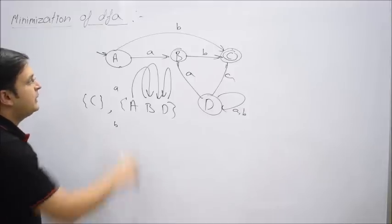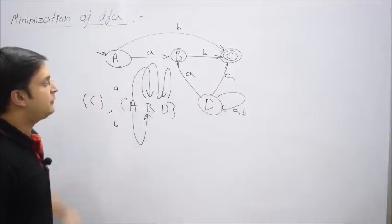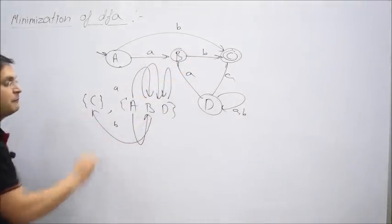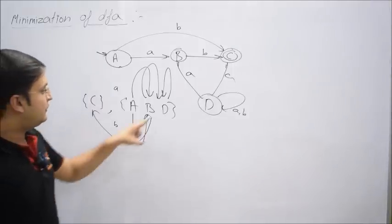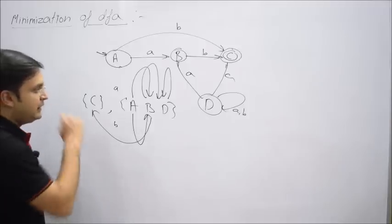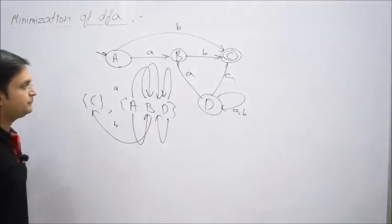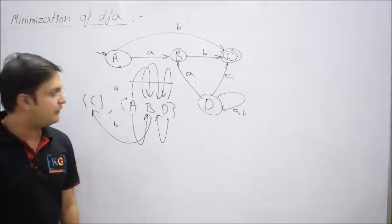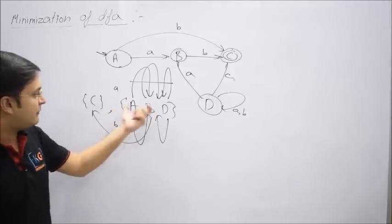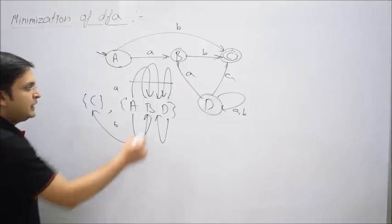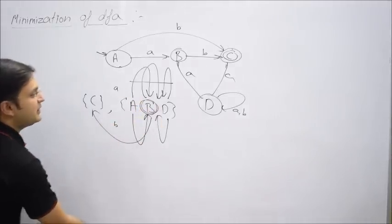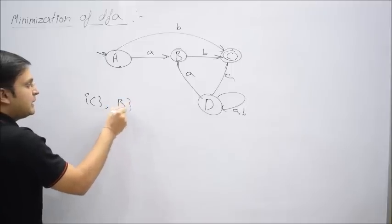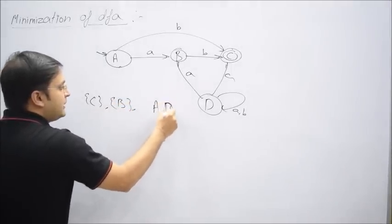Now let's check for b. Capital A on b also comes to B — same group. Capital B on b goes to C. Now there's a problem: a different behavior. Capital D on b has a self-loop. So for symbol a, all three states behave the same, but for b the behavior is different — B goes to a different group and A and D have analogous behavior. So B does not want to be in the same group.